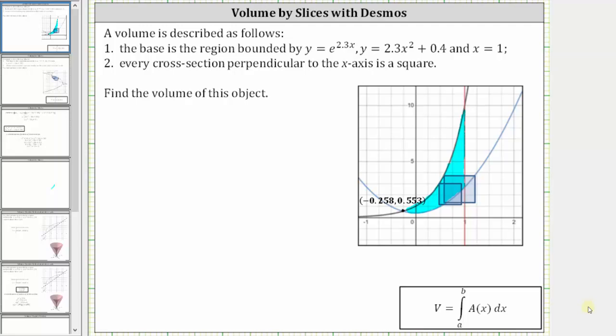The base is the region bounded by y equals e raised to the power of 2.3x, y equals 2.3x squared plus 0.4, and x equals one. I've already graphed the bounded region below, which we will also verify in Desmos.